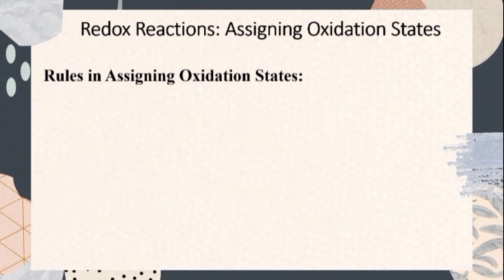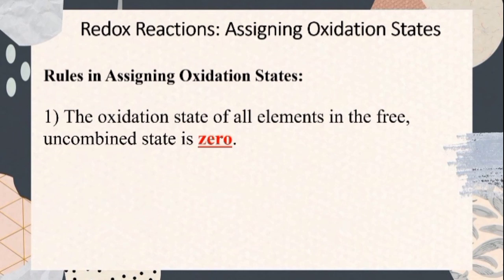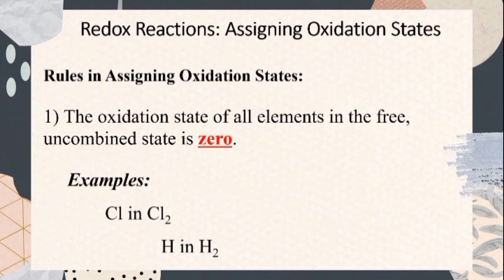Rule number one: the oxidation state of all elements in the free and combined state is zero. For example, zero for chlorine in the diatomic molecule of chlorine, zero for hydrogen in the diatomic molecule of hydrogen, zero for oxygen in the diatomic molecule of oxygen, and zero for magnesium as magnesium metal.